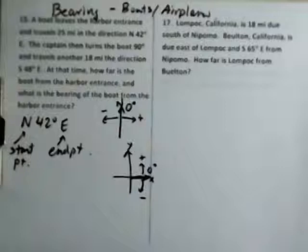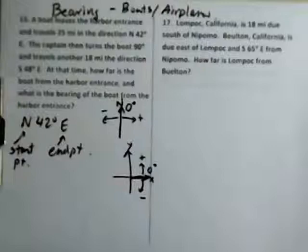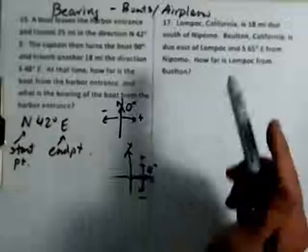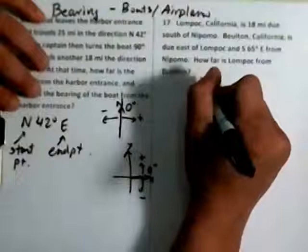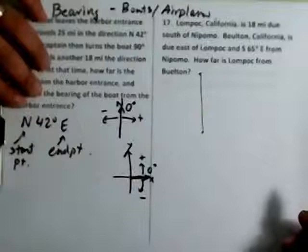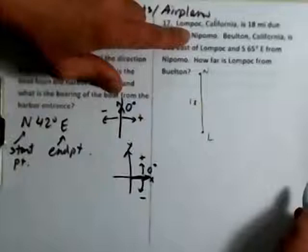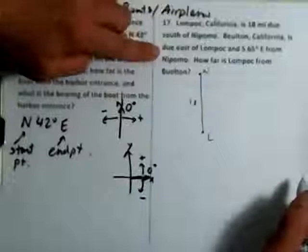Number 17. I believe Charles Peak McKeith might actually be in Santa Barbara somewhere, because Lompoc, he's very familiar with Lompoc and Buellton and Nipomo. I'm pretty familiar with that area too as well because I'm from Vandenberg. Anyways, Lompoc, California is 18 miles to south of Nipomo. So here's Nipomo, here's Lompoc, and it's 18 miles south, and that makes perfect sense. Buellton is due east of Lompoc.